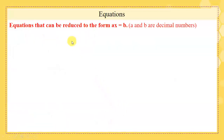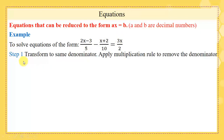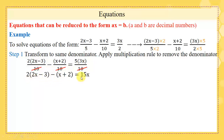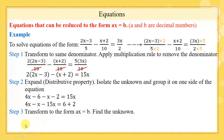Equations that can be reduced to the form ax equals b — example with fractions. To solve 2x minus 3 over 5 minus x plus 2 over 10 equals 3x over 2: step 1, find a common denominator of 5, 10, and 2, which is 10. Multiply accordingly to get equivalent fractions, then eliminate 10 from the denominator. Step 2, expand and reduce both sides. Step 3, transform to ax equals b: we get minus 12x equals 8, so x equals 8 over negative 12, which equals minus 2 over 3.